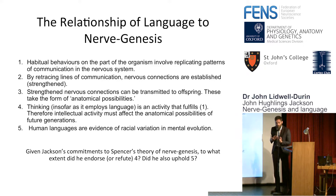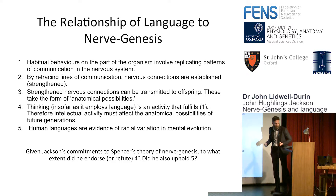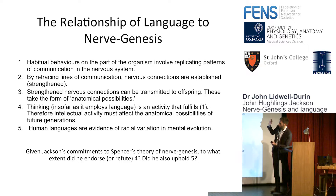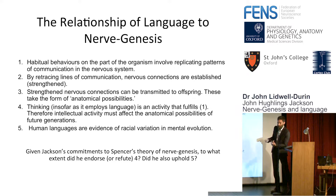So I've been saying a lot about nerve genesis and the relationship between language and nerve genesis — what does this mean? Let me quickly go through how Jackson views the nervous system evolving and what kind of view we're expecting Jackson to have at the end of the day. The first idea is that habitual behaviors on the part of the organism involve replicating patterns of communication in the nervous system. You do the same thing over and over, and it's the job of the nervous system to retrace the neurological correlate of that activity.